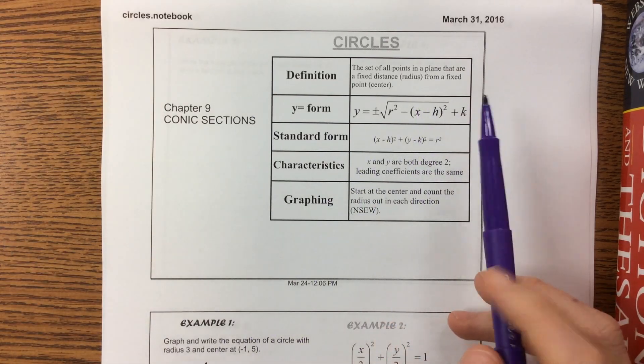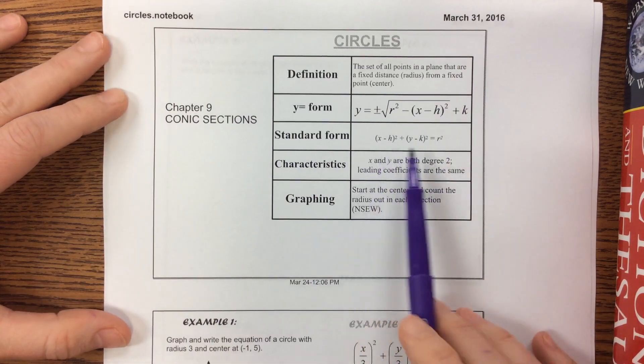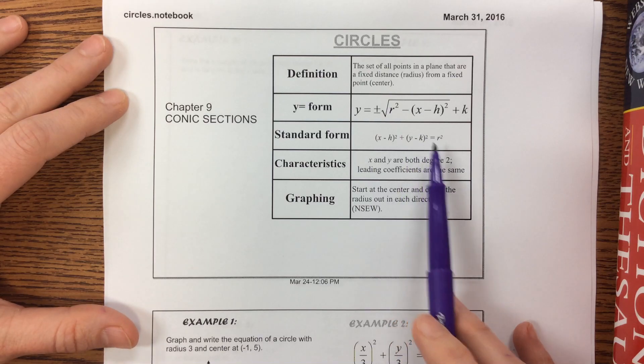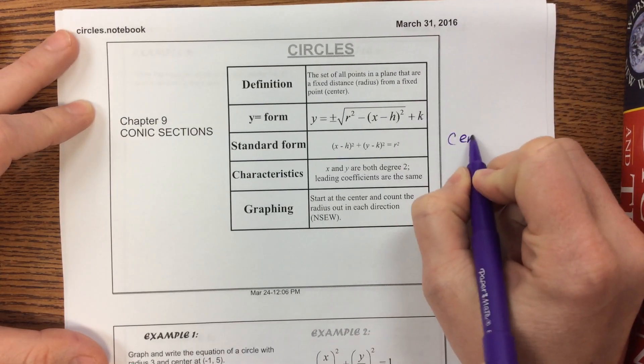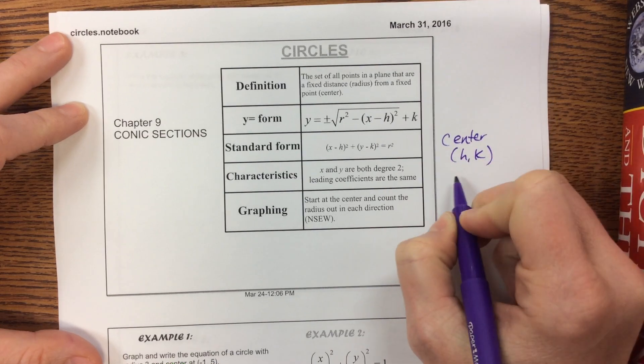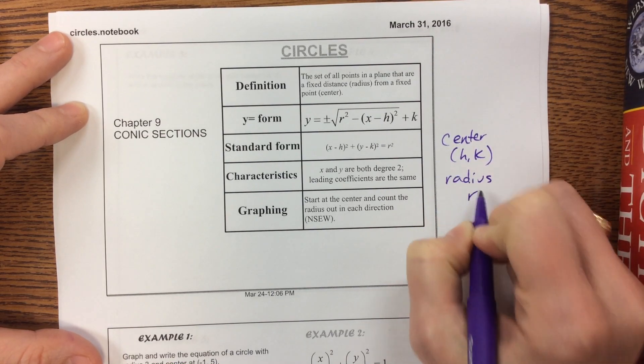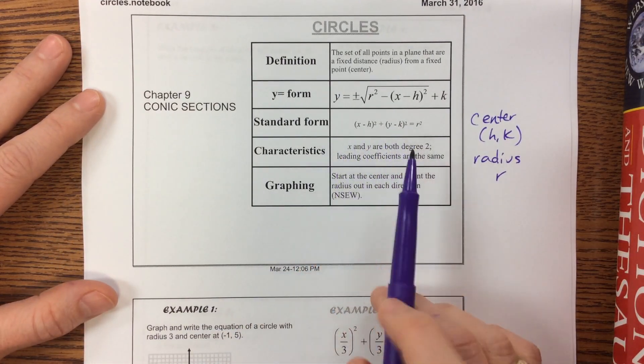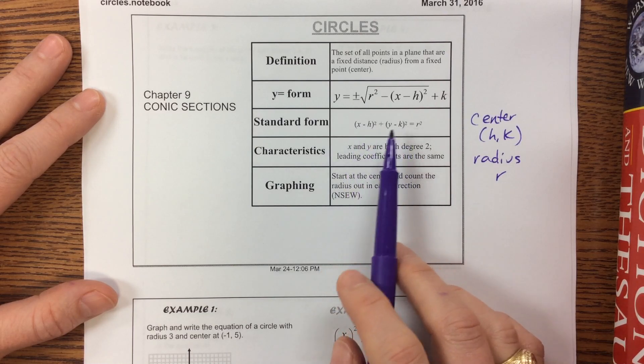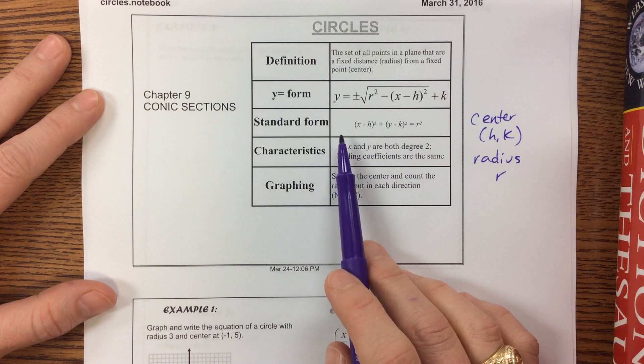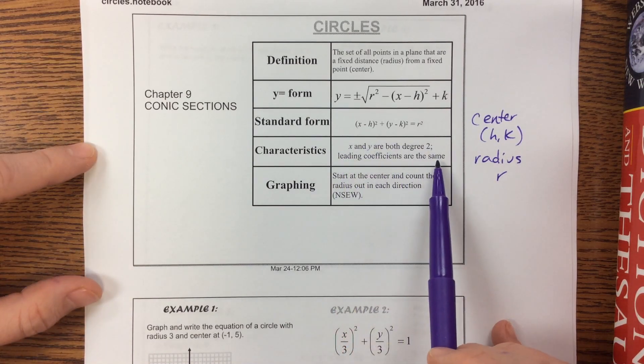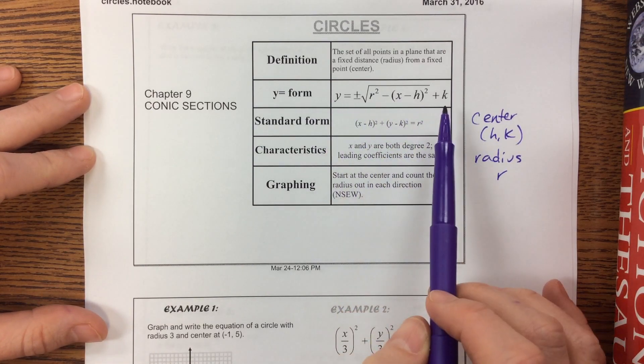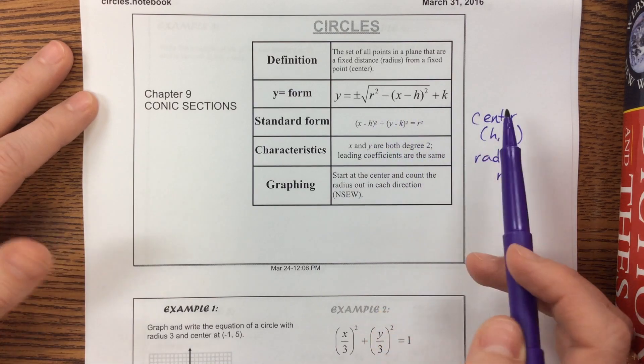A circle is a set of all points in a plane that are equidistant from a fixed point. The standard form is x minus h squared plus y minus k squared equals r squared, where the center is the point h,k and the radius is r. Both x and y get squared, and the leading coefficients are the same, because if they aren't, it'll be an ellipse instead of a circle.